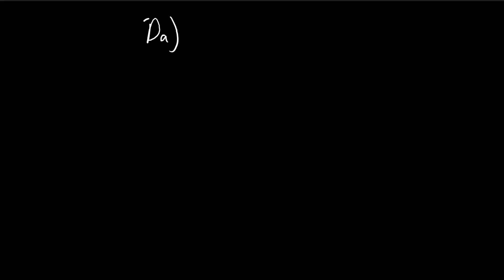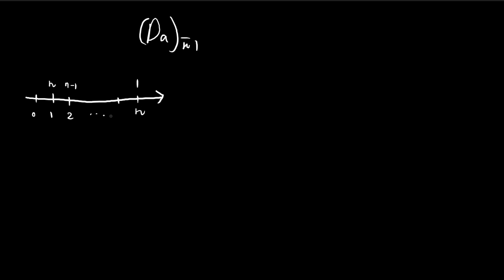Now let's move on to the decreasing annuity. This corresponds to a payment scheme where you receive n dollars at time 1, n minus 1 at time 2, and it decreases arithmetically all the way to time n, where you receive 1 dollar. So at time n minus 1 you receive 2 dollars.